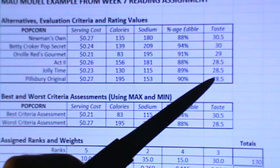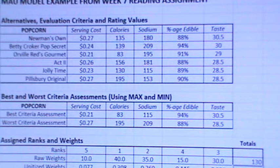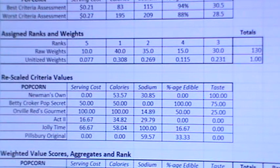So through this process of ranking, coming up with raw weights, and then using a little bit of easy math, I came up with the unitized weights — the actual weights that we're going to use in the process. The next thing we did, just as we were told to do in the article, is we scaled the criteria that we were given initially, and I did it using the formula.